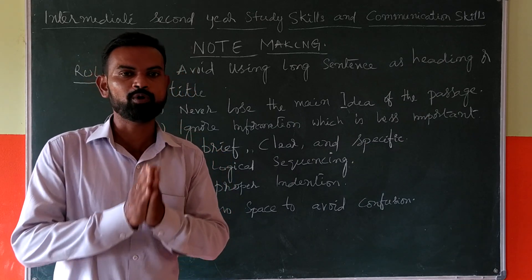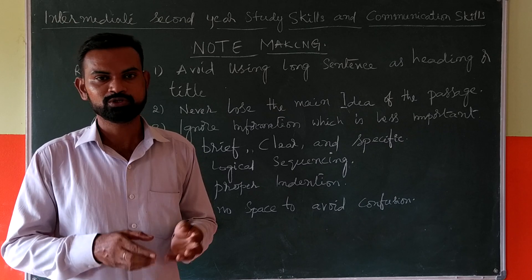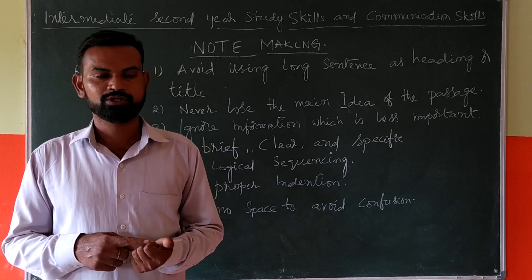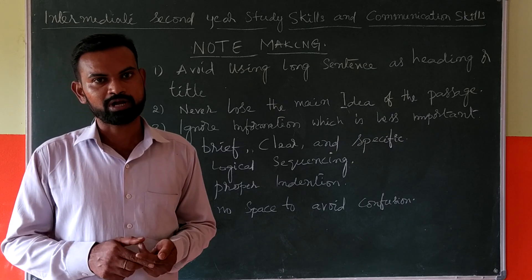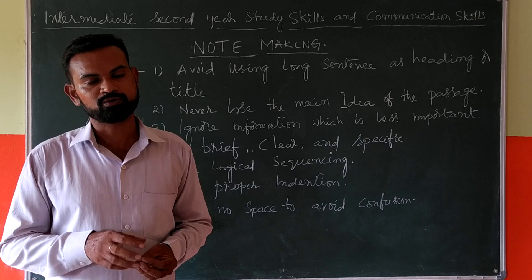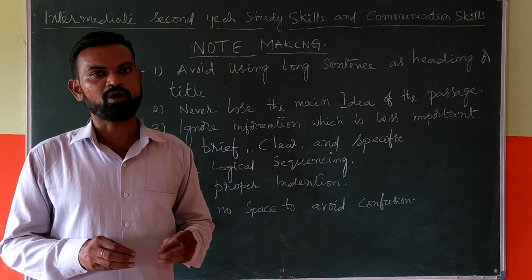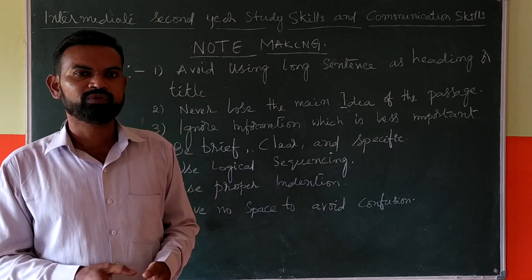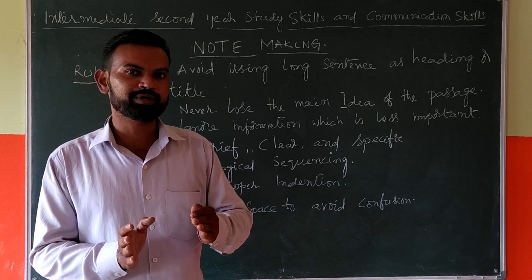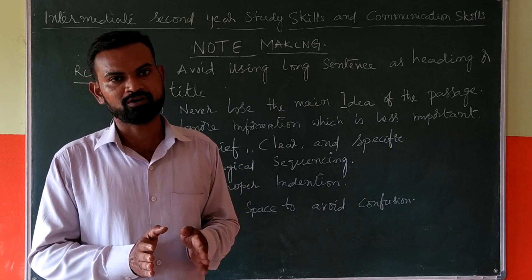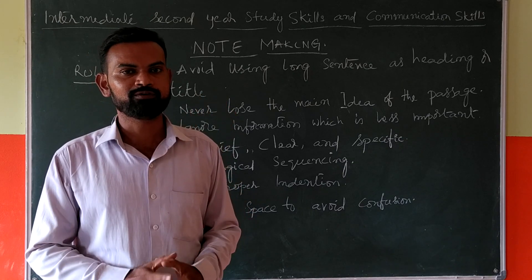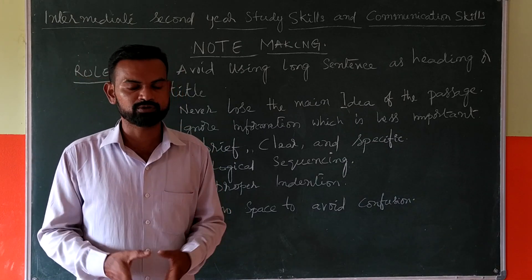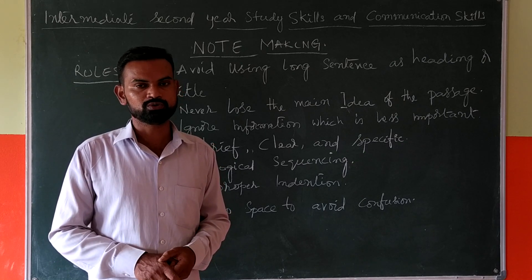These seven points are to be followed in note making. For example, they give you a paragraph about yourself — your study, your age, your qualification, your family details, your likes and dislikes, your strengths, and your future goals. That makes approximately fifteen lines about yourself.